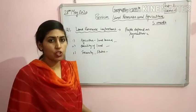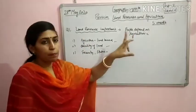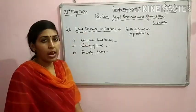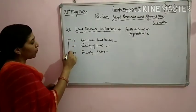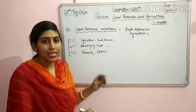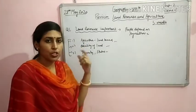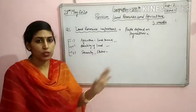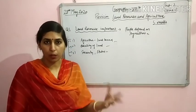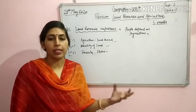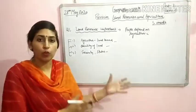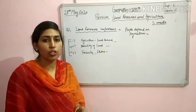Now we look at the five-mark portion of this chapter. First question: importance of land resource to people who depend on agriculture. For those whose livelihood source is agriculture — those who are dependent on farming — land resource is very important. There are three points in our NCERT book. Land resource is important because agriculture is a land-based activity. Just as raw material is important in manufacturing industries in the secondary sector, in the agriculture sector the most important resource is land itself.